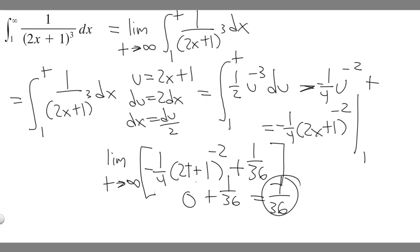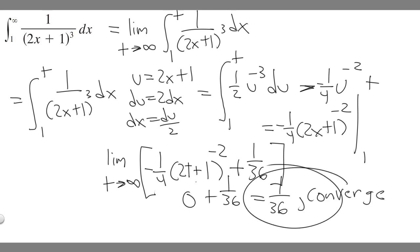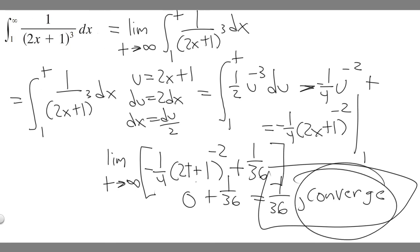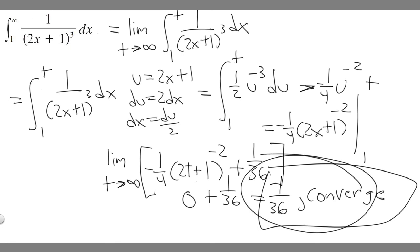Notice how the result goes to a definite number — it doesn't go to infinity or negative infinity. So this improper integral is going to converge onto 1 over 36. That's your answer.